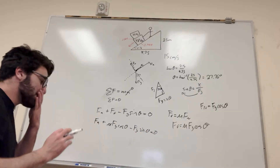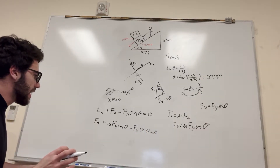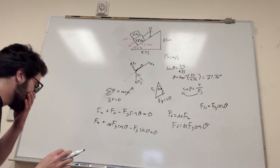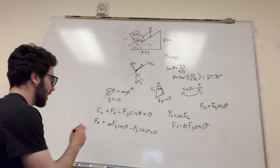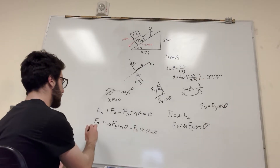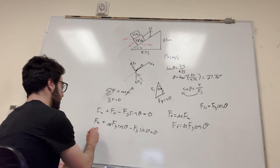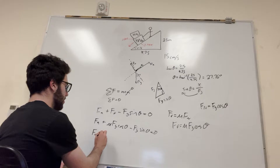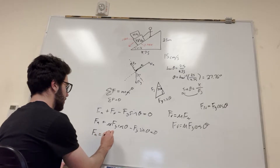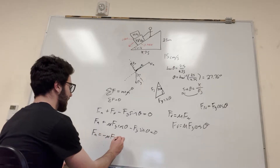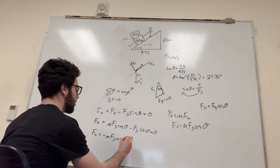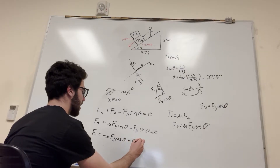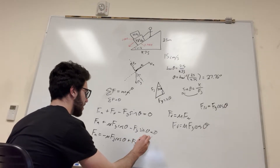Plugging into the equation: coefficient of friction times force of gravity times cosine of theta minus force of gravity times sine of theta equals zero. Moving everything to the other side, force applied equals negative coefficient of friction times force of gravity times cosine of theta plus force of gravity times sine of theta.